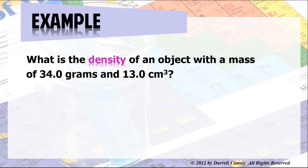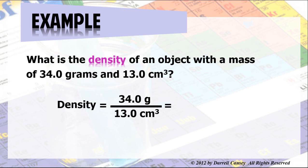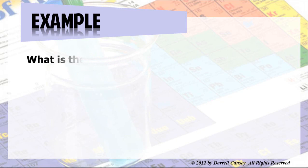In our example here, what is the density of an object with a mass of 34 grams and 13.0 cubic centimeters? Well, density equals the grams divided by the volume. And therefore, we'll plug and chug that. And we get 2.62 grams per cubic centimeter. And that's our density.